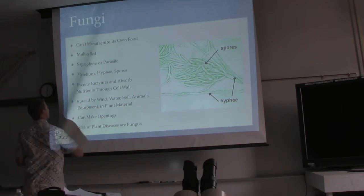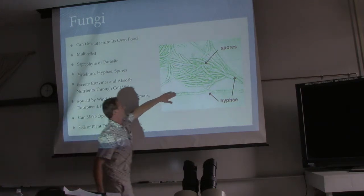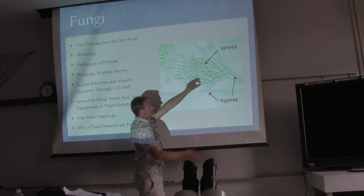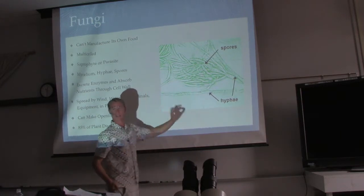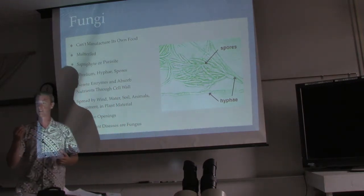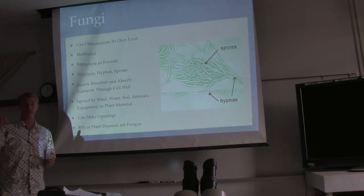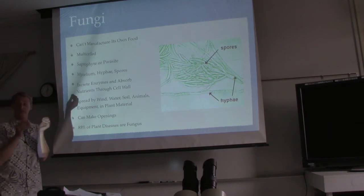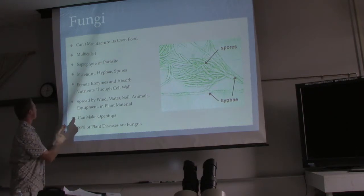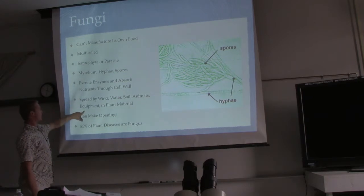Fungi excrete enzymes and absorb nutrients through the cell wall. If a hypha is lying next to a piece of leaf, it excretes enzymes to start breaking down the material. Once the material breaks down, nutrients are released and absorbed directly through the cell wall — no mouth, just absorbed. Fungi spread through wind, water, soil, animals, and equipment.